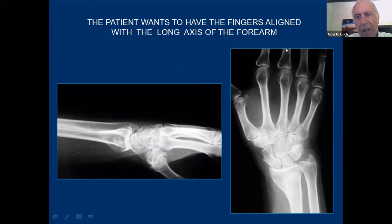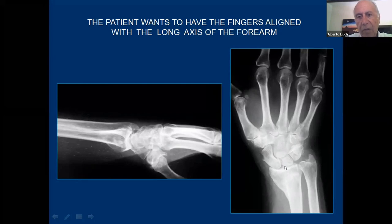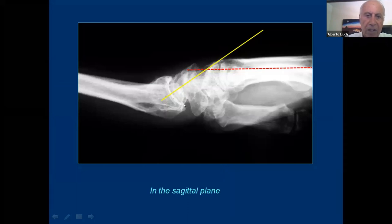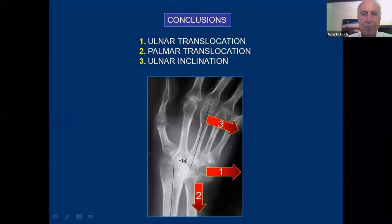This is exactly what happens with patients that have an ulnar inclination of the fingers — the patient always likes to have the fingers aligned. If the wrist is normal, he will correct it even after severe deformities of the distal radius. If the MP joints are severely deformed from rheumatoid arthritis, the patient will correct the deformity at the level of the wrist. In conclusion, the deformities we see in the wrist are: first, ulnar translocation of the carpus; second, palmar translocation of the carpus; and finally, ulnar inclination of the metacarpus.